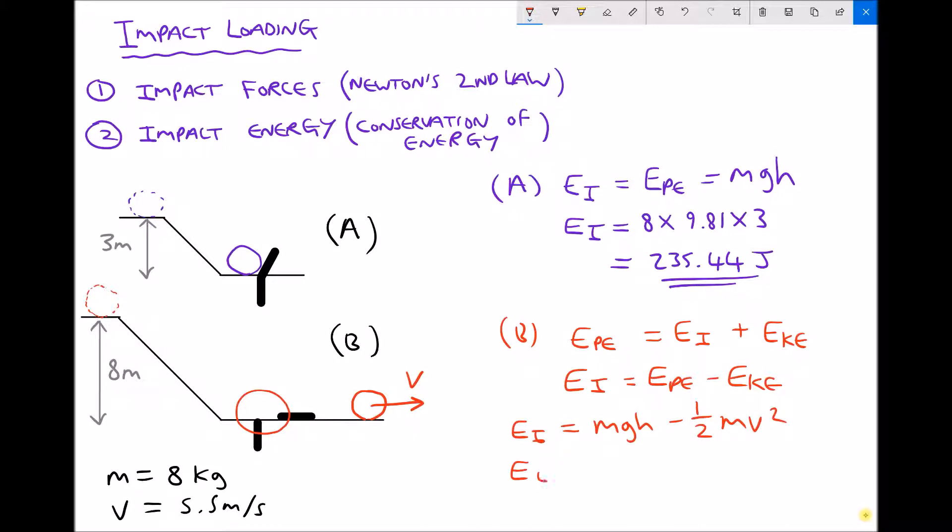So we have impact energy equals the same mass times gravity of 9.81, and this time the object started at a height of 8 meters, minus a half times the mass again which is 8 times the velocity squared, and our velocity is 5.5 meters per second. Now running that all through our calculators we get an answer of 506.84 joules.